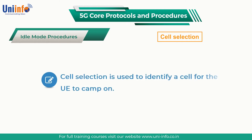Cell selection is used to identify a cell for the UE to camp on. It is applicable after a UE is switched on, after a UE leaves RRC connected mode, and after a UE returns to an area of coverage.